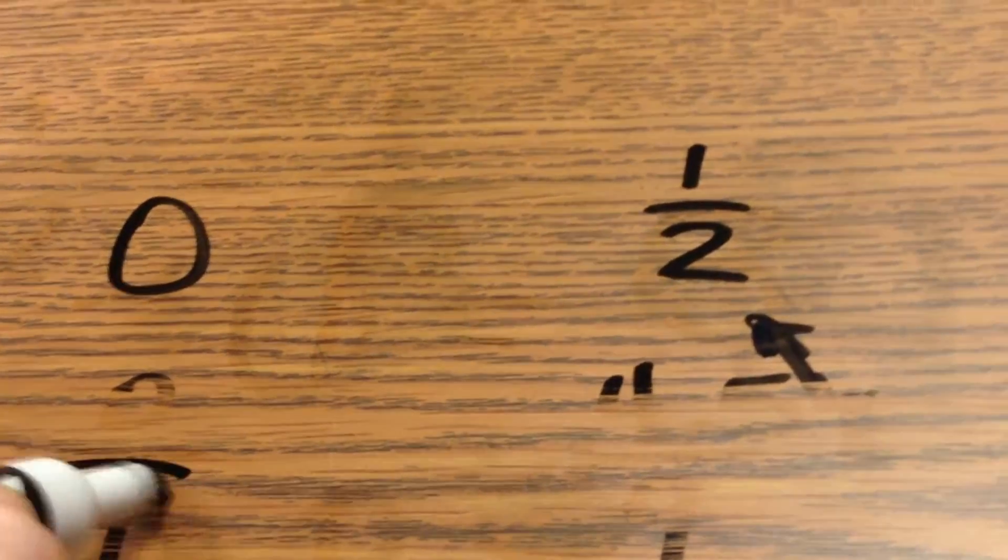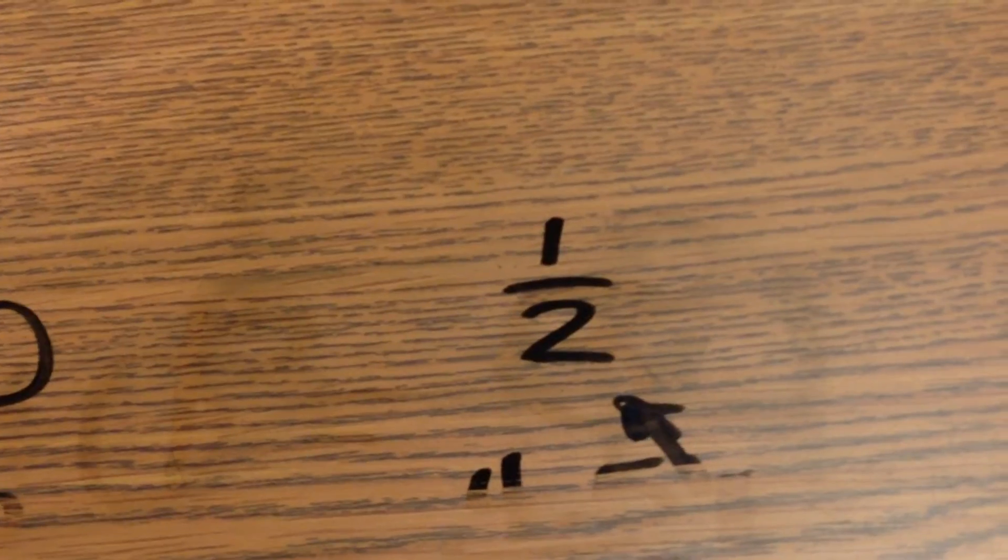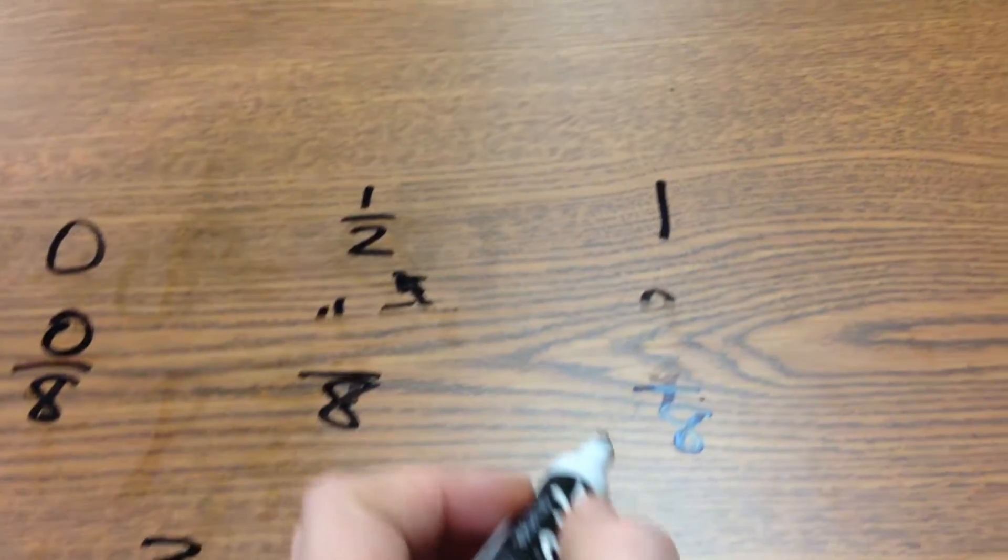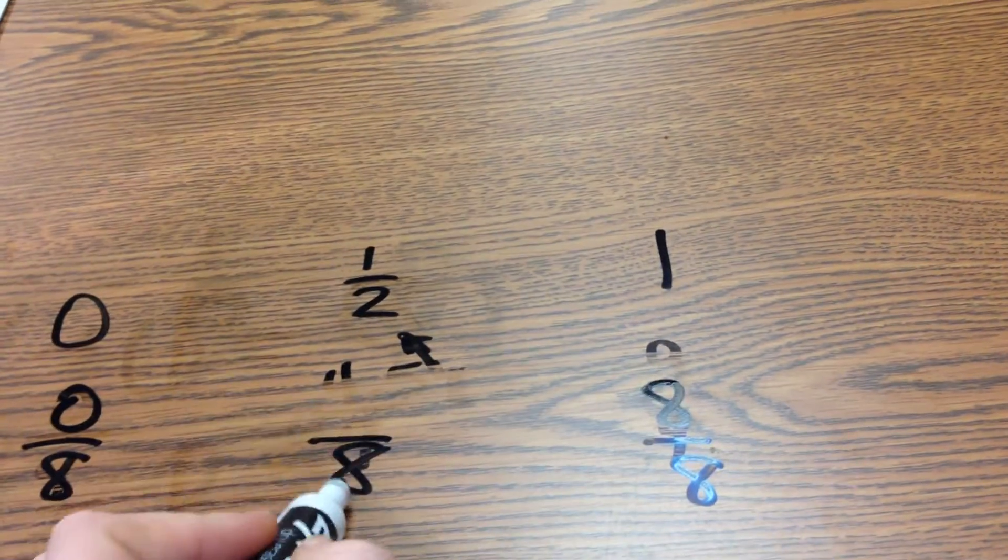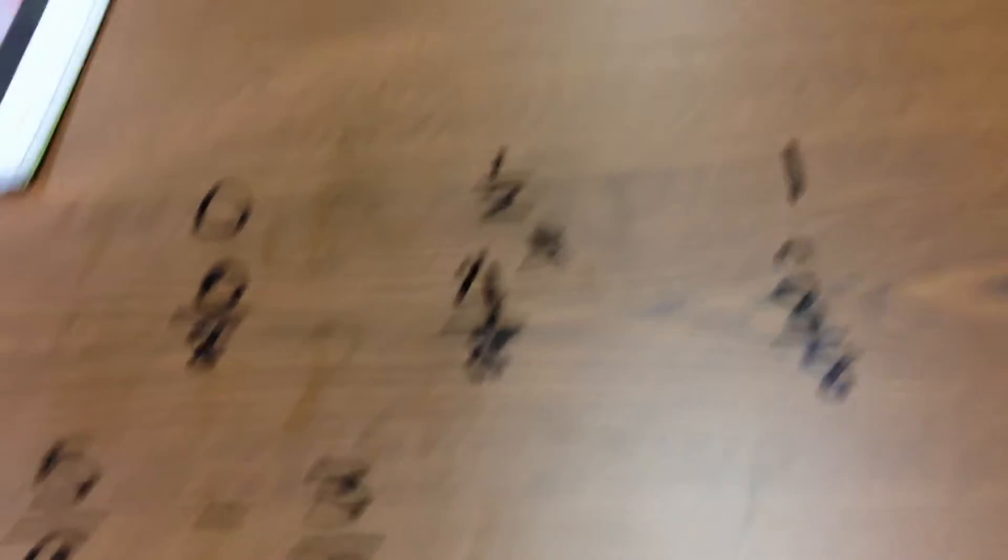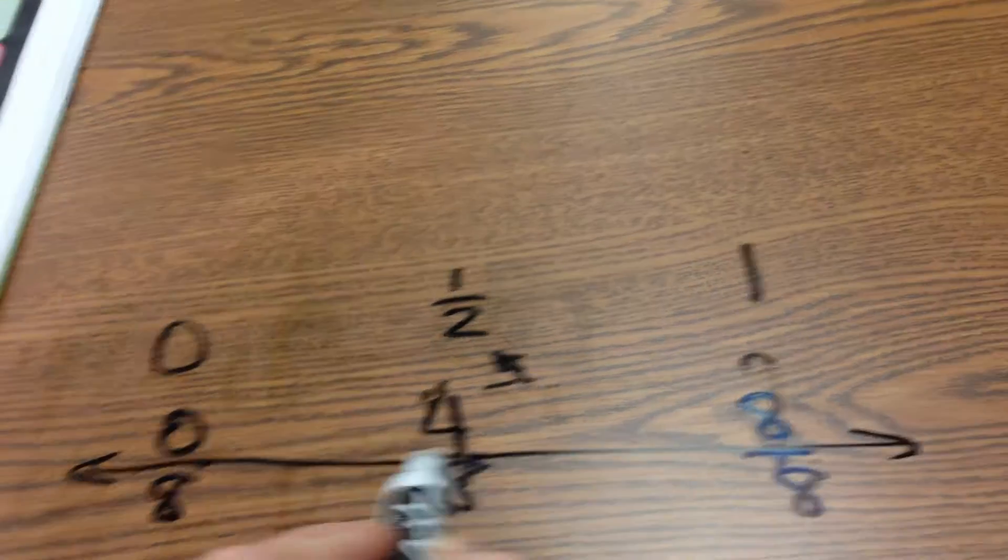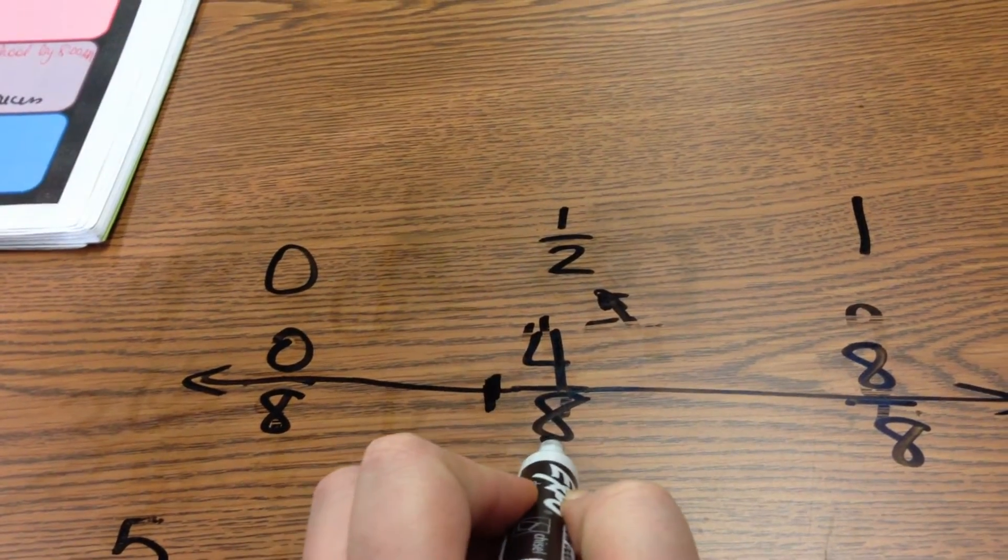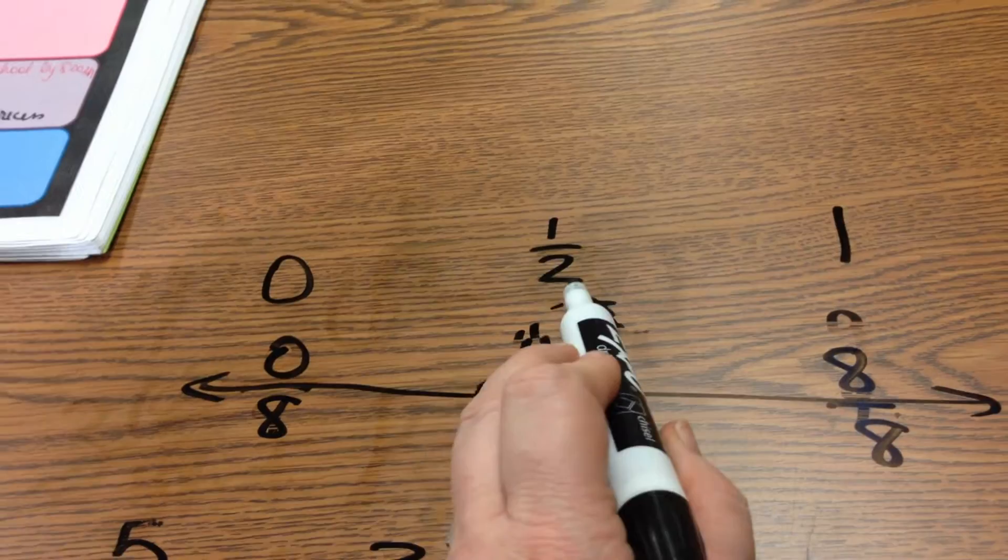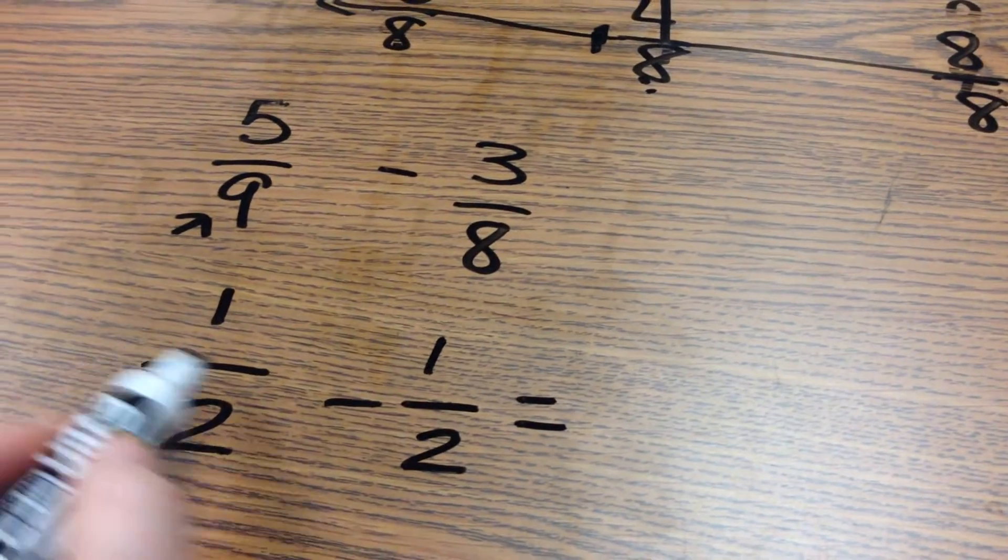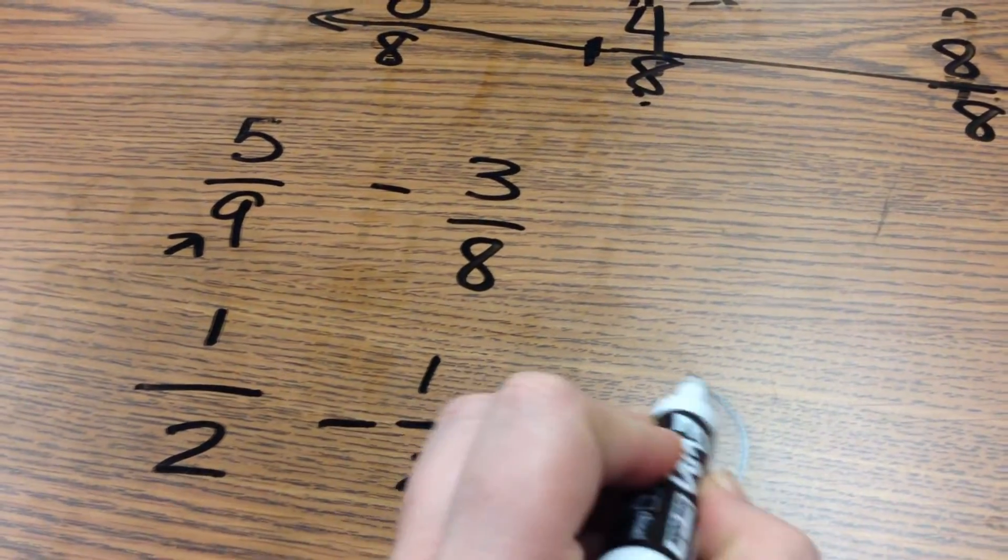Now, for three-eighths, you would do the same thing, except now we have eighths on the bottom. Zero would be zero-eighths. One would be eight-eighths, and then half of eight is four. Now, we're looking at three-eighths. Three-eighths, if this were on a number line, would be right here. So that puts it closest to four-eighths, which is the benchmark for one-half. So I would round three-eighths to one-half, and then one-half minus one-half equals zero.